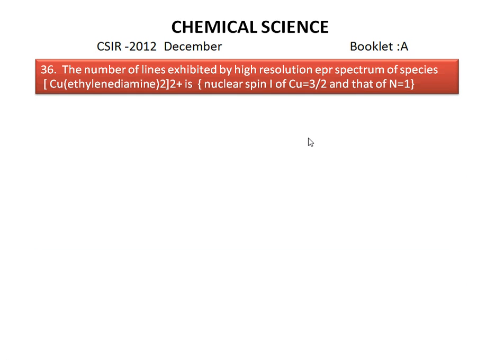The question is: the number of lines exhibited by high resolution EPR spectrum of species diethylenediamine copper 2 plus is? The given nuclear spin of copper is 3/2 and nuclear spin of nitrogen is 1.